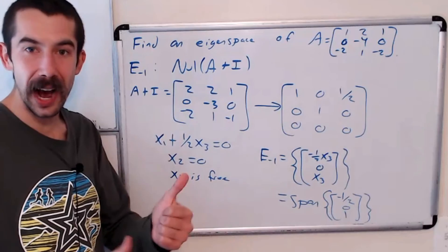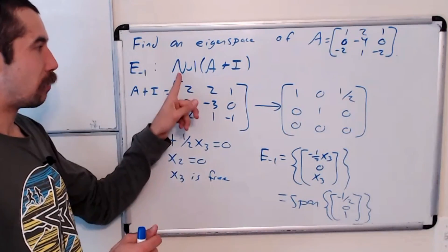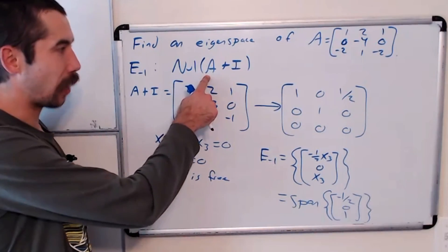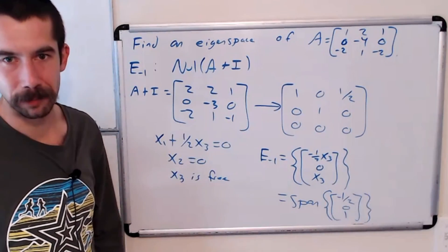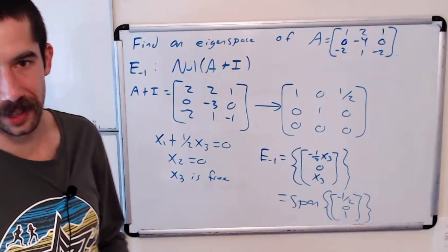So not too bad. Find the eigenvalues, and then find the null space of A minus that eigenvalue times I, which just takes a little row reduction. Thanks for watching, I'll see you later.